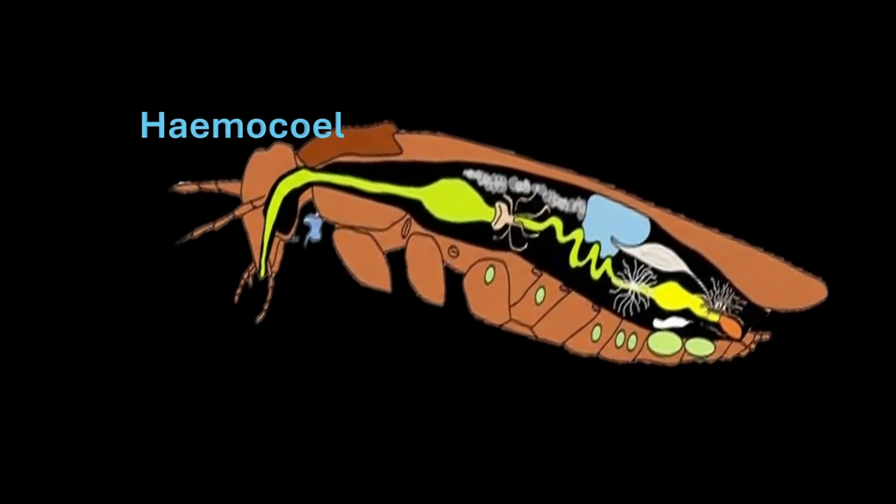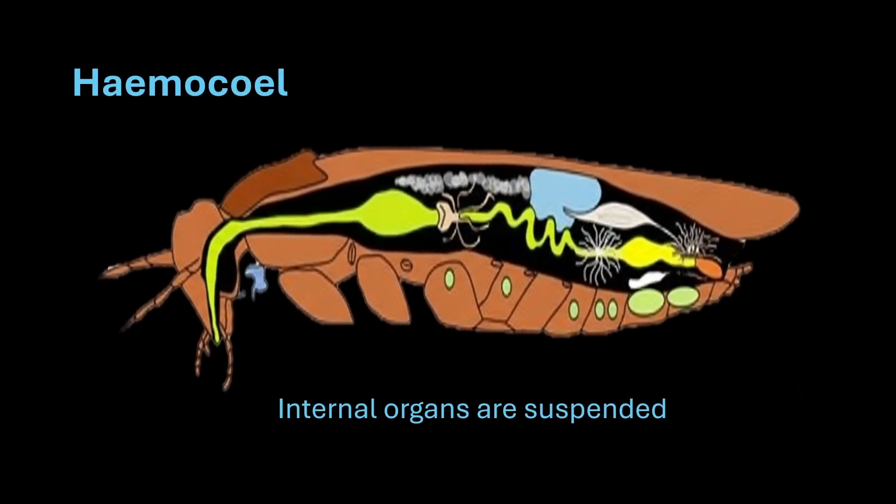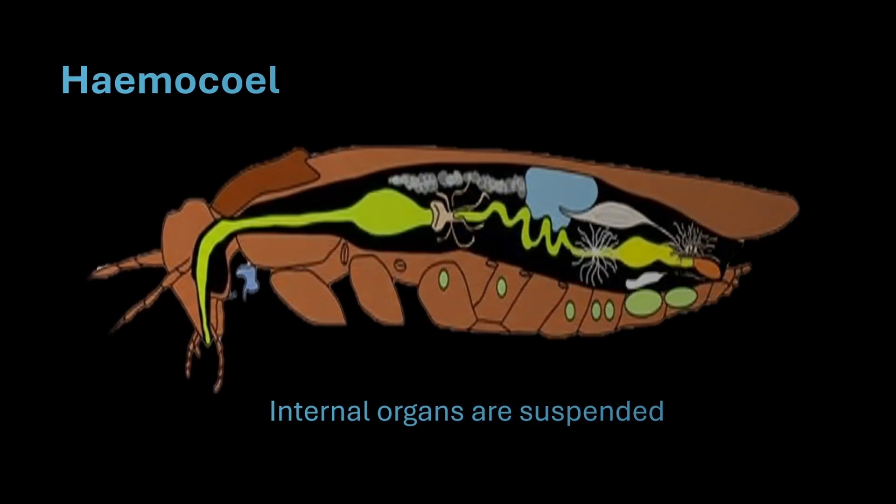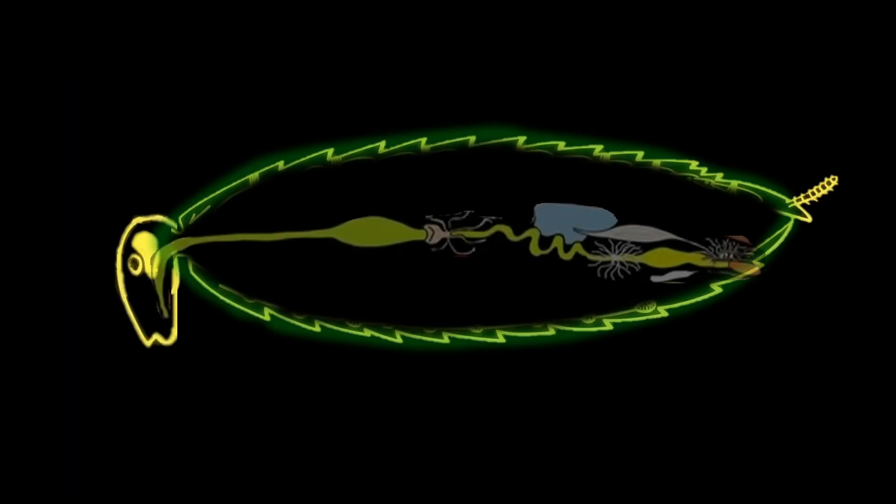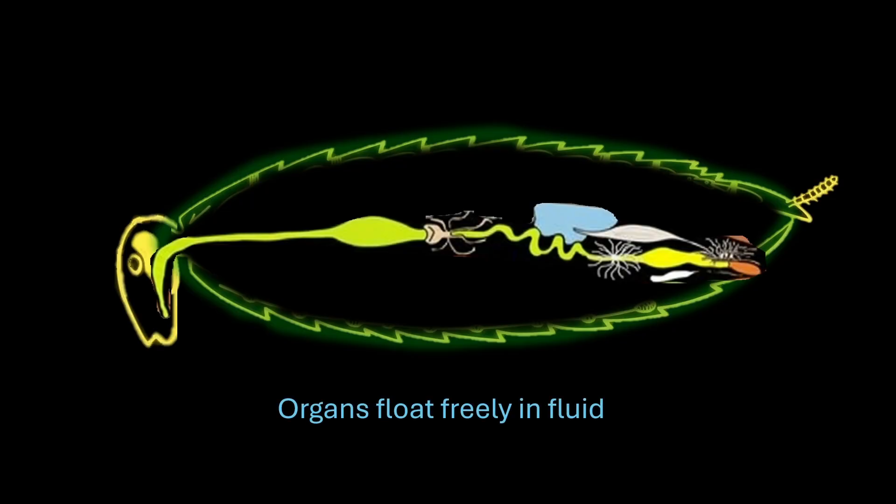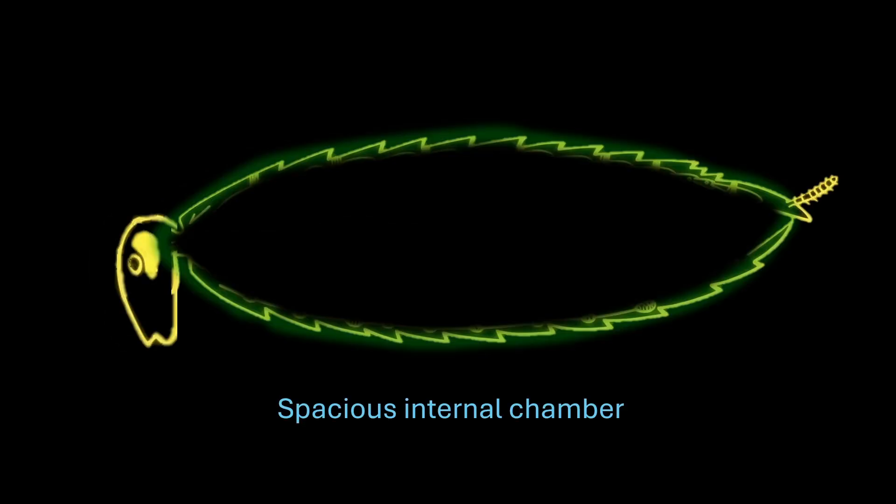This fluid-filled cavity is called hemocele. All the internal organs of a cockroach are suspended in this hemocele. You can imagine it like a spacious internal chamber where organs float freely in a fluid. But this hemocele is not just one big open space.